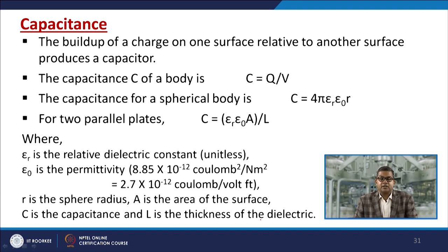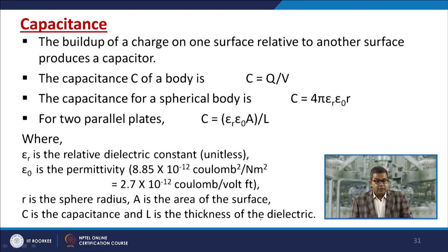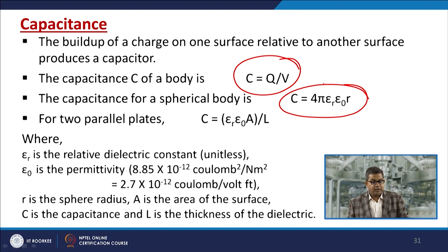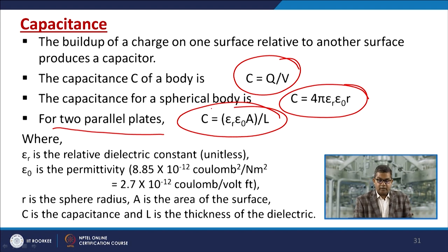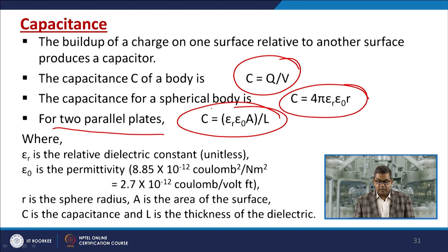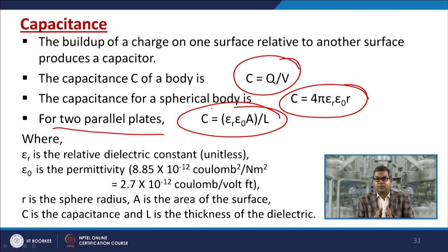Capacitance is the build-up of charge on one surface relative to another, producing a capacitor. The capacitance C of a body is defined as C = Q/V, where V is voltage and Q is charge. The capacitance of a spherical body and of two parallel plates can be determined using standard formulas. Key variables include epsilon-R (the relative dielectric constant, unitless), epsilon-naught (permittivity, approximately 8.85 × 10⁻¹² C²/N·m²), R (sphere radius), A (surface area), and L (thickness of the dielectric).